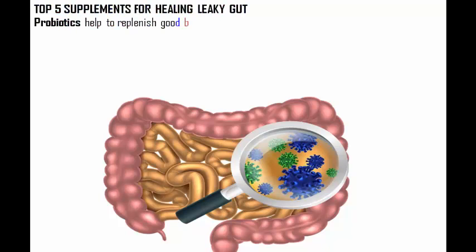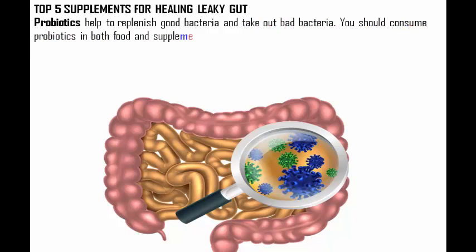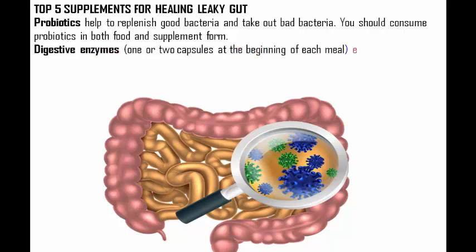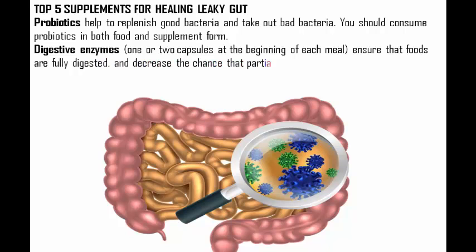Top five supplements for healing leaky gut. One: probiotics — they help replenish good bacteria and eliminate bad bacteria. You should consume probiotics in both food and supplement form. Two: digestive enzymes — take one or two capsules at the beginning of each meal to ensure foods are fully digested and to decrease the chance that partially digested food particles and proteins damage your gut.